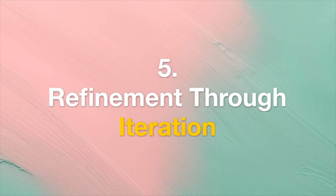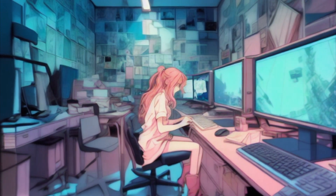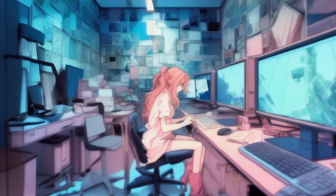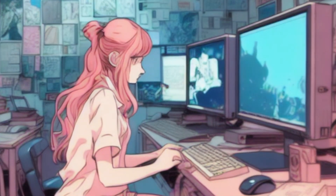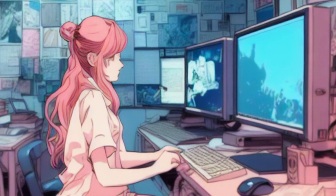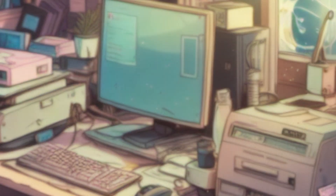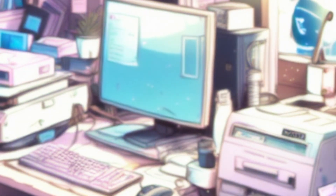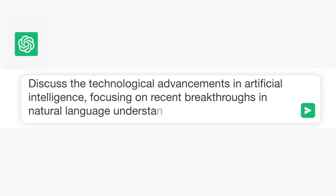Tip 5: Refinement Through Iteration. Should the initial response not align with your expectations, refine your prompts iteratively. Experiment with rephrasing and additional context until the desired outcome is achieved. For example: "Discuss the technological advancements in artificial intelligence, focusing on recent breakthroughs in natural language understanding."